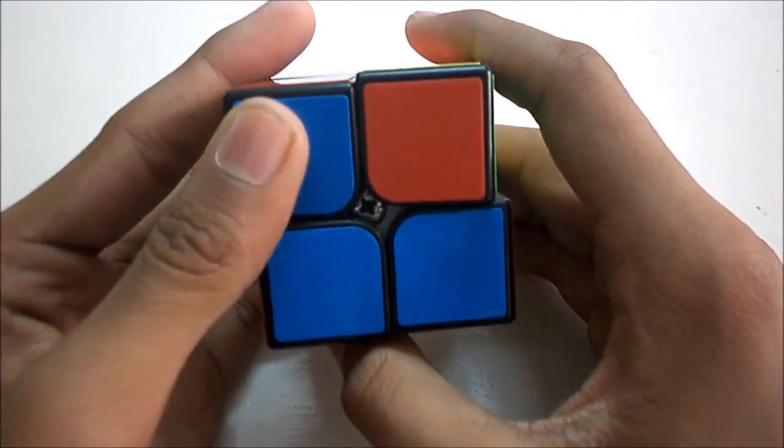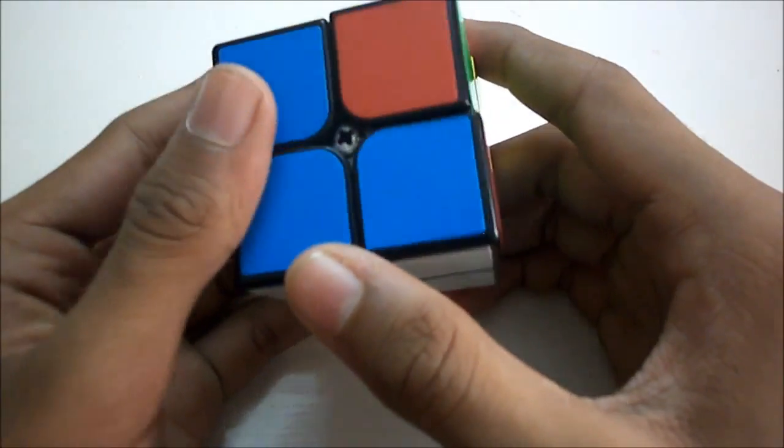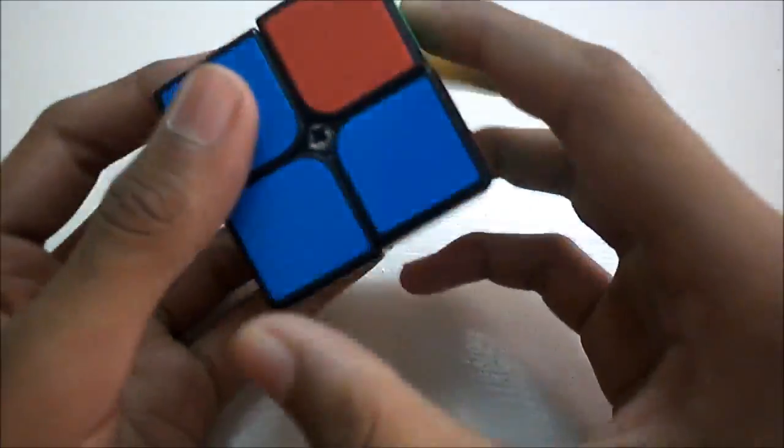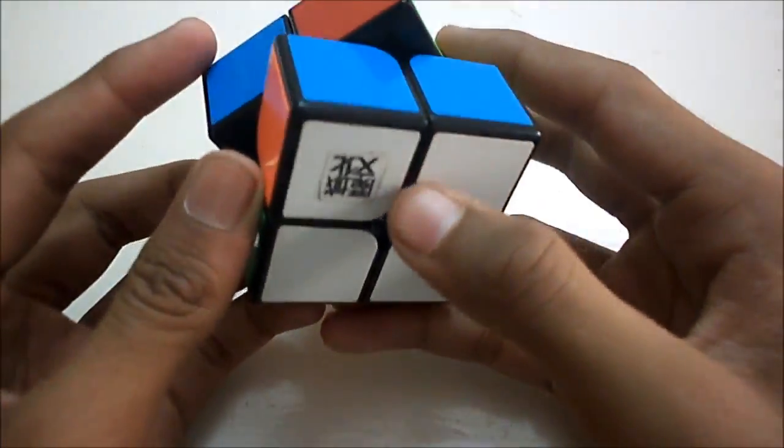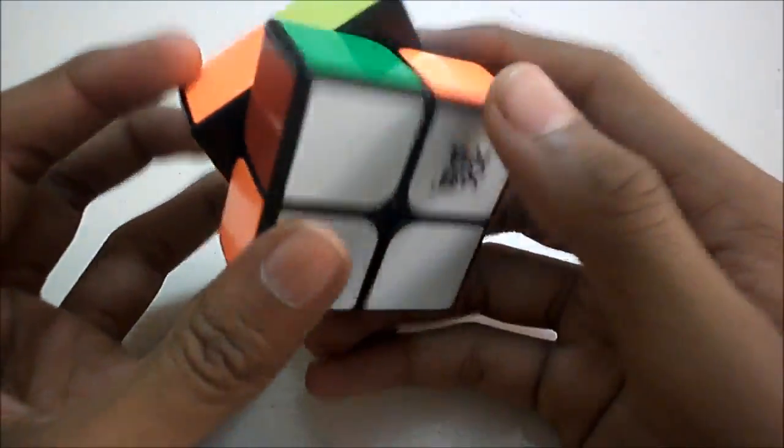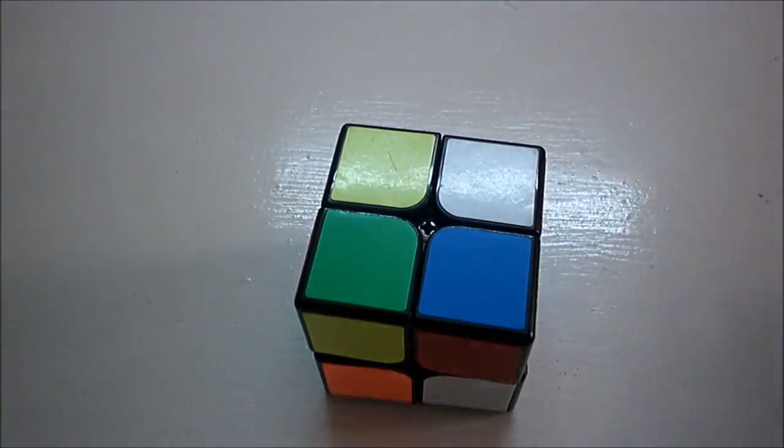So the first step is the face and it's just like layer by layer except instead of making a layer we only have to make a face like so. So the first side should be pretty simple.